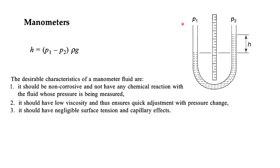Suppose P1 is the pressure we want to measure and P2 is exposed to the atmosphere. If P1 is high, it pushes the manometric fluid downwards and there is some difference between the two levels. Suppose this is equal to h; then h can be related with the pressure difference by the equation P1 = P2 + ρgh. Since P2 is usually the atmospheric pressure, P1 can be calculated from this equation.